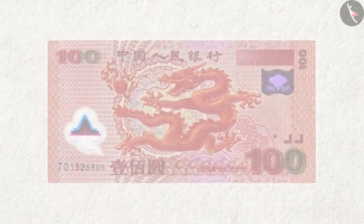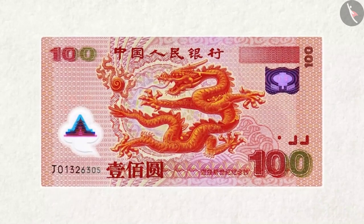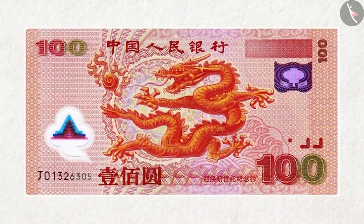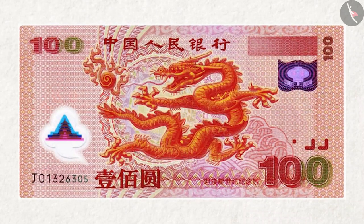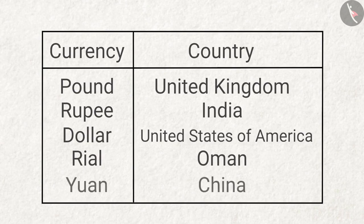Grandpa shows the final note and asks: 'This is a note of which country and by what name is this currency known?' Answer: This currency belongs to China and it is called the yuan.